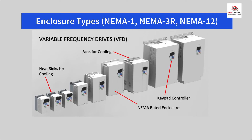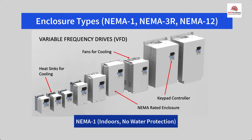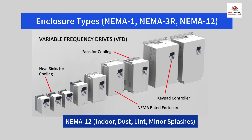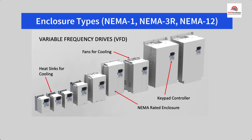NEMA 1 rated enclosures are made for indoors with no water protection. NEMA 3R is rated for indoor or outdoor use where rain, snow, or ice may form. NEMA 12 is rated for indoors with dust, lint, and other dirt circulating in the air along with minor water splashes. There is an enclosure for any environment — these are just three of the most common, and they get more expensive as the environment gets more hazardous and dirty.